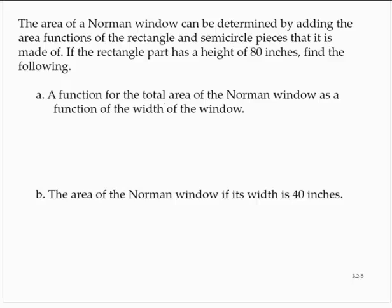The area of a Norman window can be determined by adding the area functions of the rectangle and semicircle pieces that it is made of. If the rectangle part has a height of 80 inches, find the following.